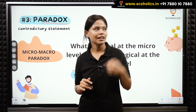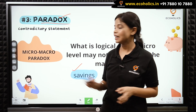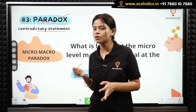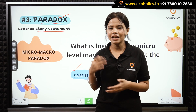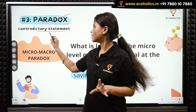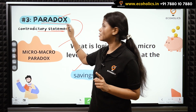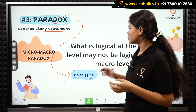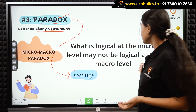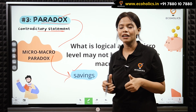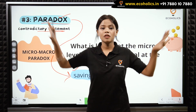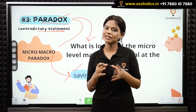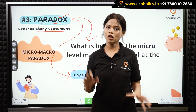We will understand that in later slides. For now, always remember paradox is a contradictory statement — for example, saying something is good and something is not good; those two statements contradict each other. The example given here is the paradox of savings — what is logical at the micro level may not be logical at the macro level. Whatever is great at the small level is not necessarily great at the bigger picture level too.